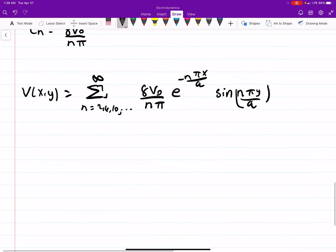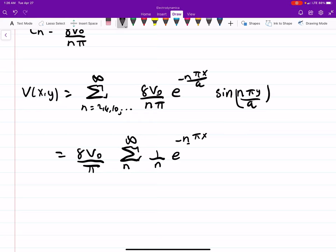And if you wanted to, you could factor out 8V₀ over π. We have this sum of 1 over n, e to the minus nπx over a, sine of nπy over a, and this is your potential.